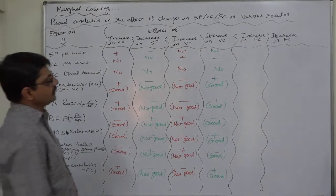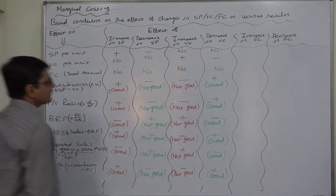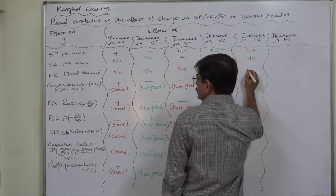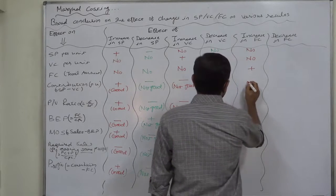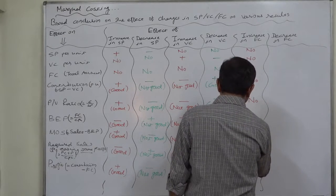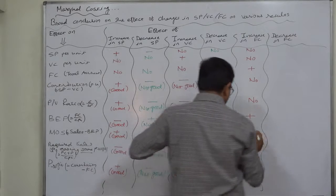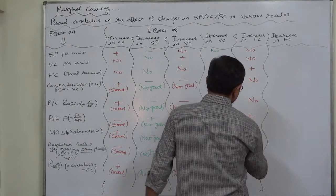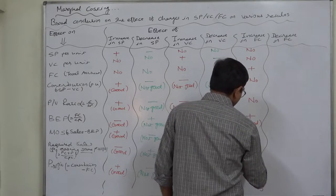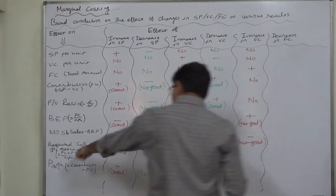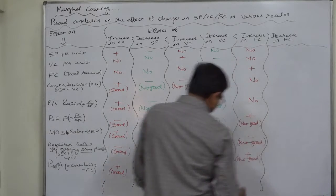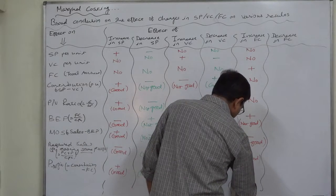If fixed cost increases: no effect on selling price, no effect on variable cost. Fixed cost has increased but there is no effect on contribution and no effect on PV ratio. However, BEP will increase — not good for the financial health of the firm. If BEP increases, margin of safety decreases — not good. If fixed cost increases, required sales increases — not good. If fixed cost increases and contribution remains constant, profit decreases — not good.